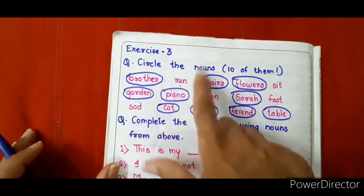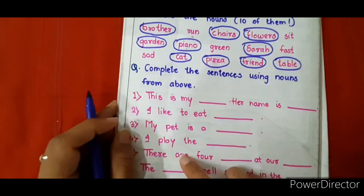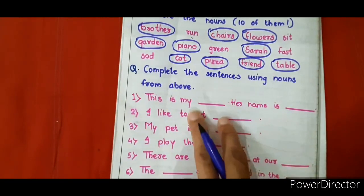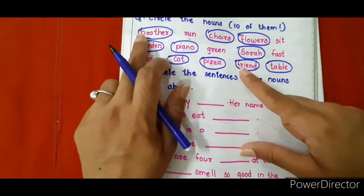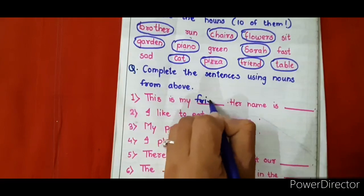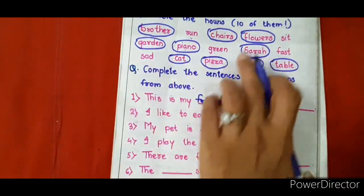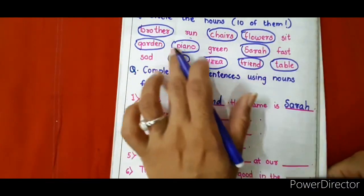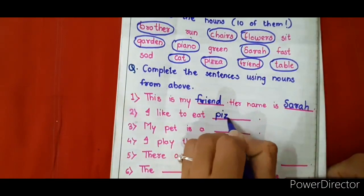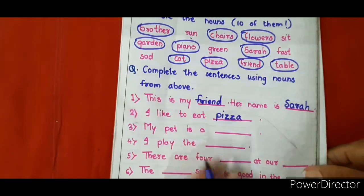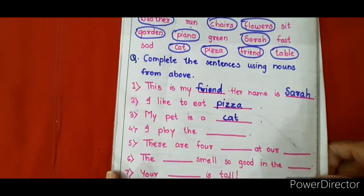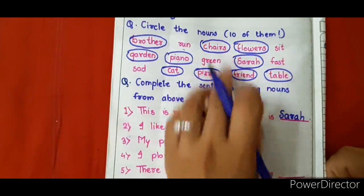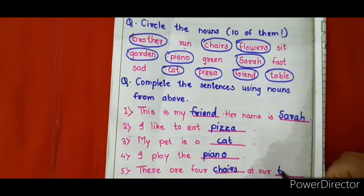Now what we have to do is use these nouns appropriately in the following sentences to complete them. This is my dash — her name is dash. We have used 'her,' so it should be a girl. I can use the noun 'friend,' as brother is a boy. So: This is my friend. Her name is Saraha — we have only one name and that is Saraha. I like to eat — do you know any noun which is something to eat? Yes, we have pizza. My pet is a cat. I play the piano. There are four — we can use chairs here: We have four chairs at our table.